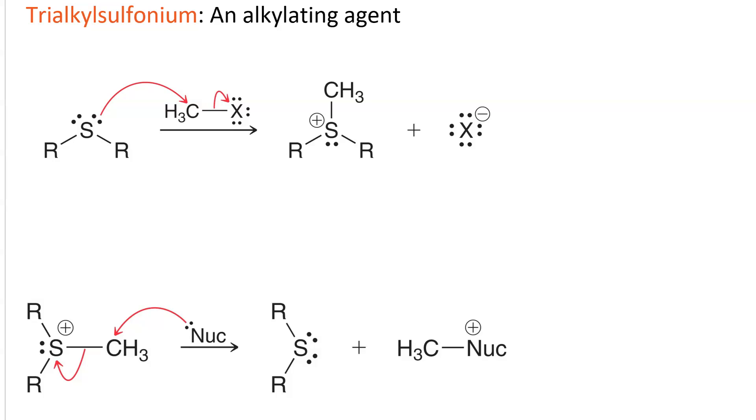So if I take my sulfide and I react it with an alkyl halide, guess what? That sulfide is still a very strong nucleophile. So it's going to do nucleophilic attack and SN2 attack on my alkyl halide. And so I've got my trialkyl sulfonium.